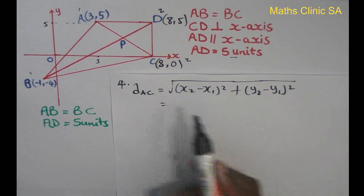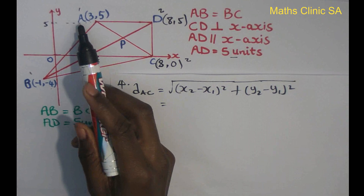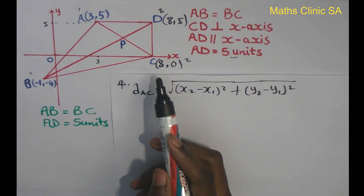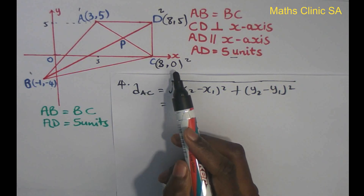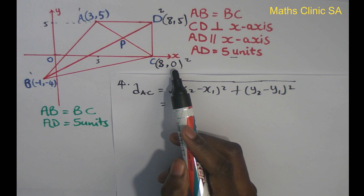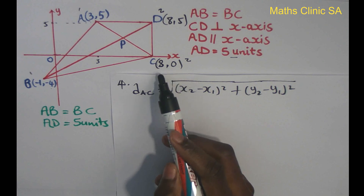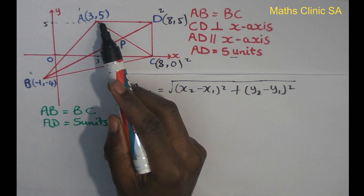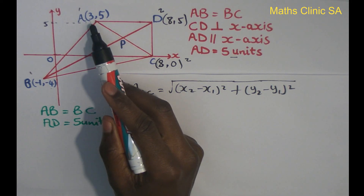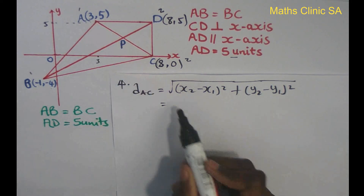I am going to identify point number 1 and point number 2. Point A is point number 1 and point number 2 provides the values for x2 and y2, while x1 and y1 come from the other point.